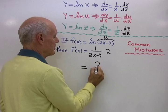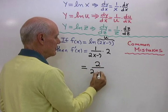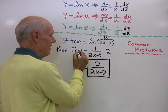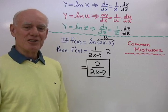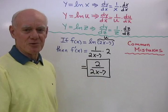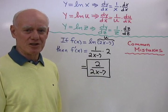So that whole thing comes out to be 2 over 2x minus 7, and that's the derivative of f with respect to x. So when I give a quiz or a test on problems like this in class, what do I look for as far as common mistakes go?